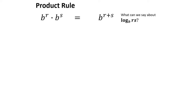The first property is called the product rule. For exponents, if we have the same base and we're multiplying two things together, we can just add their exponents: b to the r times b to the s equals b to the r plus s. We know that exponents and logarithms are related, so this should apply to logarithms as well.